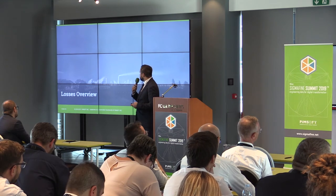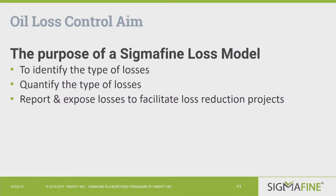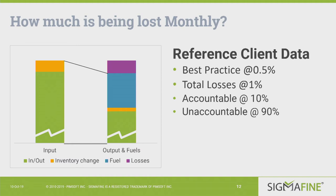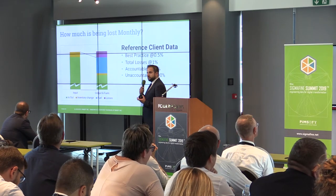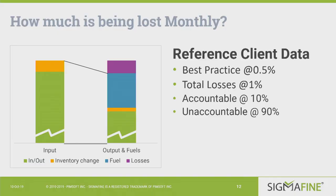SigmaFine can be used to identify the type of losses — fugitive emissions, flare, etc. — and as in normal accounting, it is useful to properly quantify these losses and then report them, sharing information with other departments to take corrective action. Of course SigmaFine doesn't reduce losses by itself; it identifies them. The scope is to reduce the losses, represented by the purple rectangle in the picture, which corresponds exactly to the equation used for the losses definition.